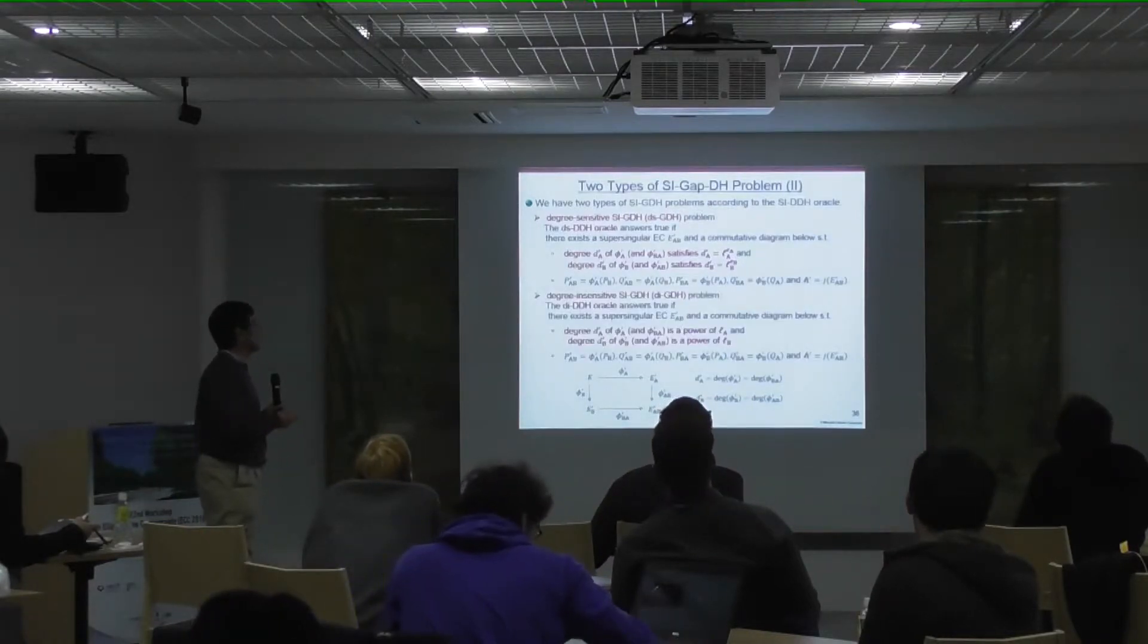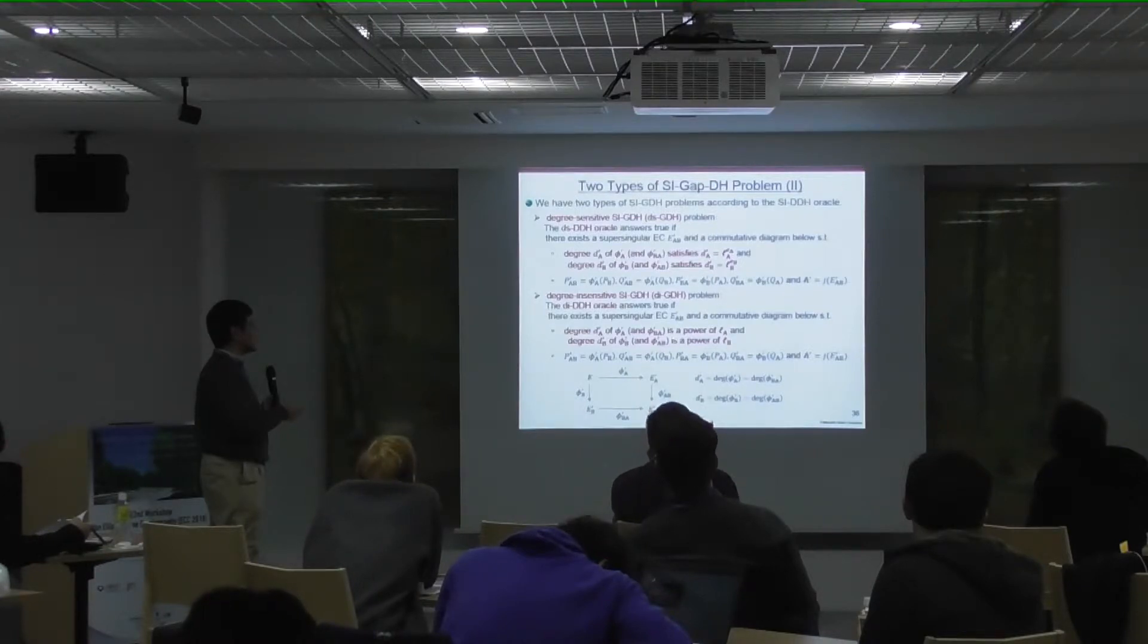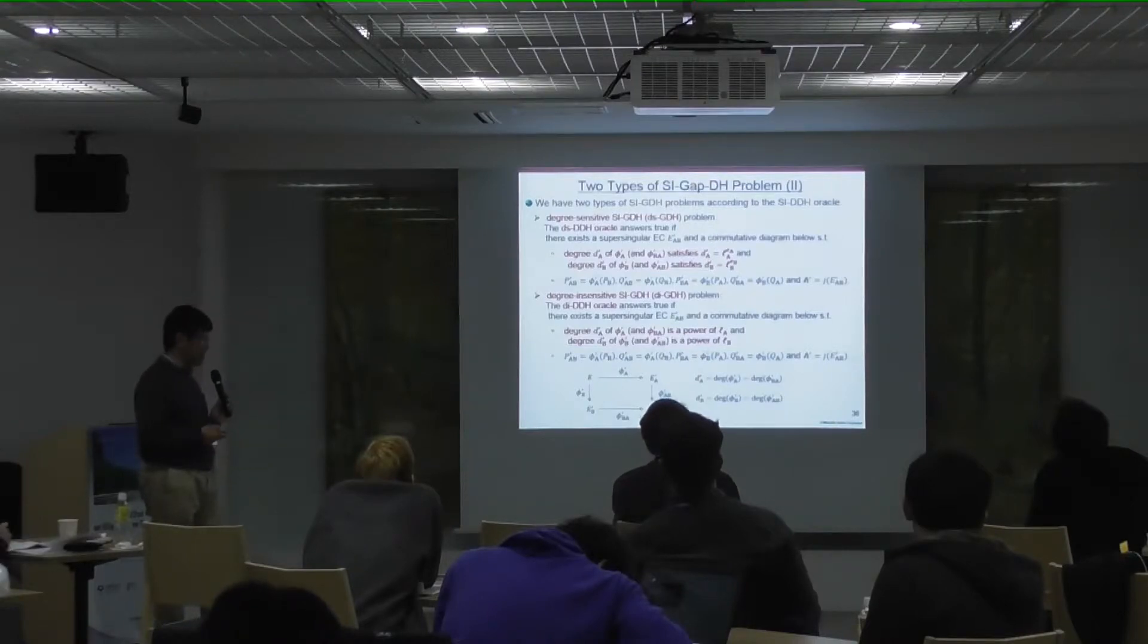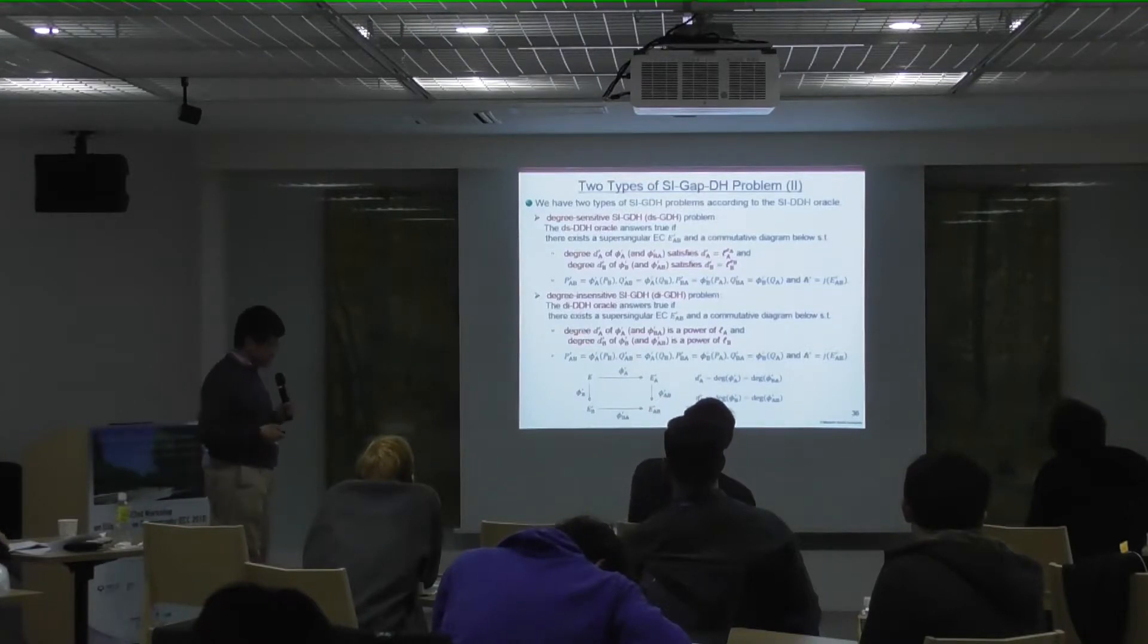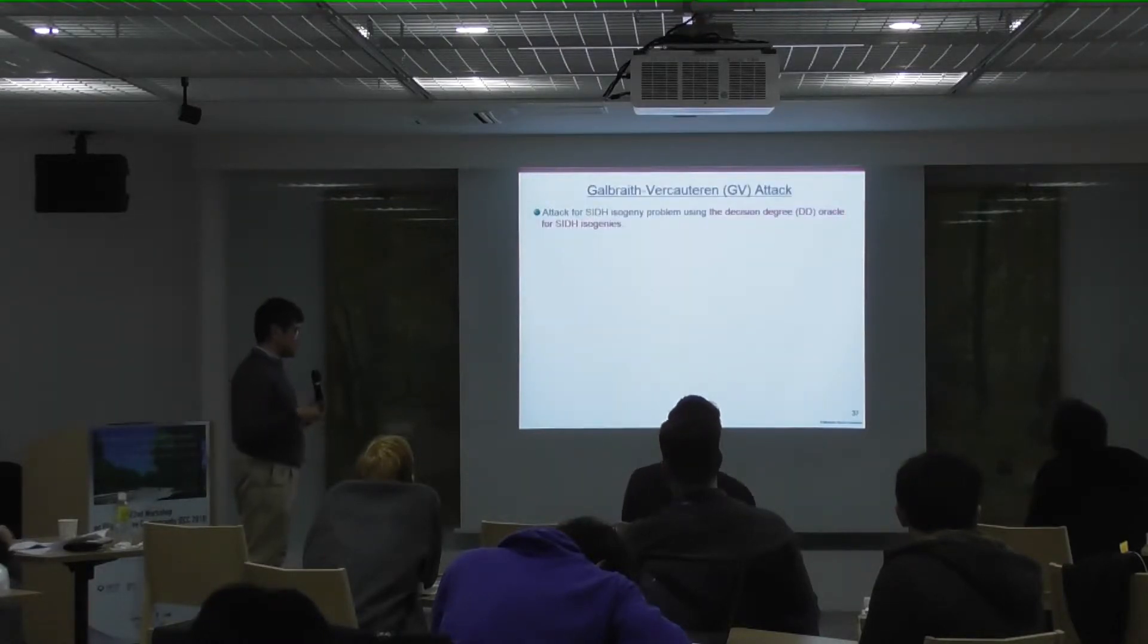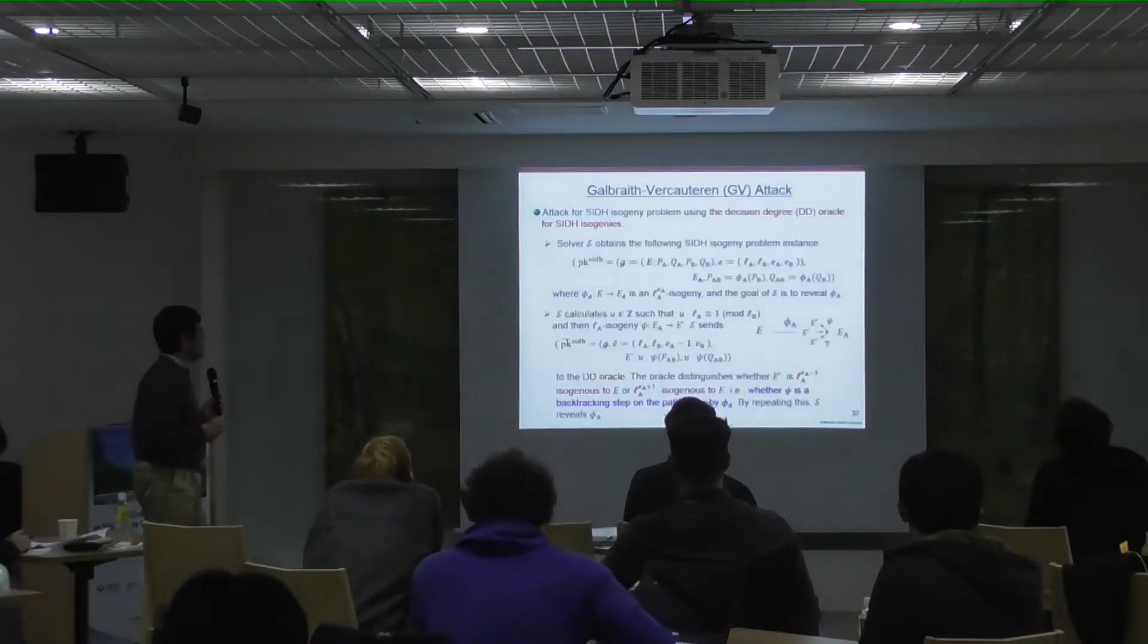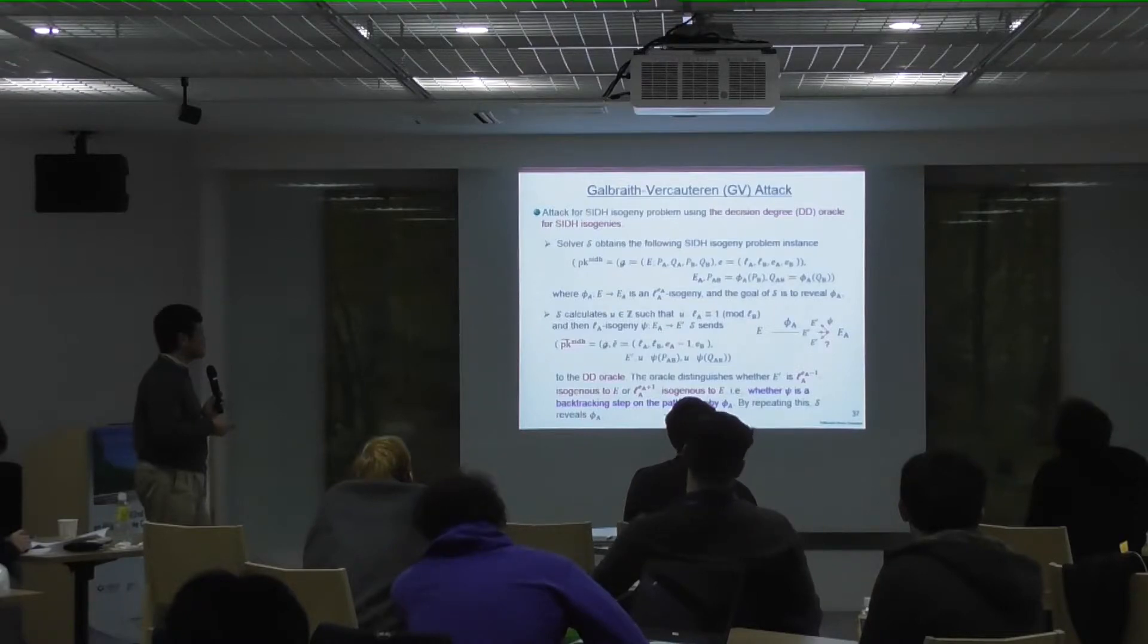I will explain such attack in the next two slides. But to avoid such attack, I relax this condition. So the degree of isogeny is just a power of LA. If we use such relaxation, we can prove our system under this variant of GAP DH.